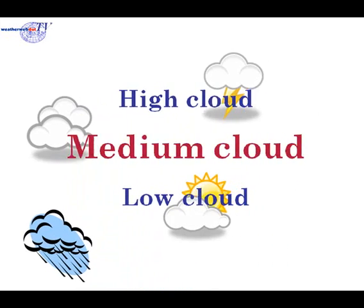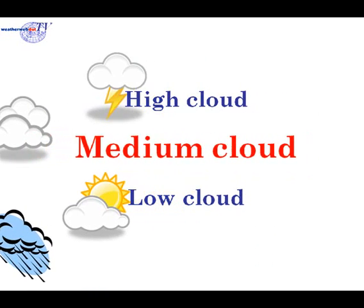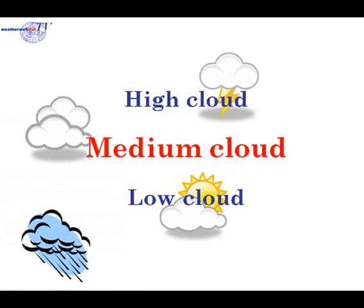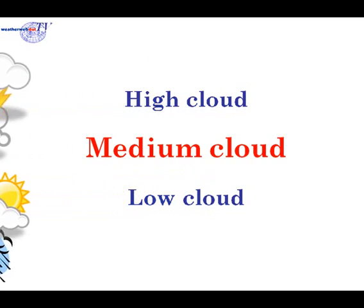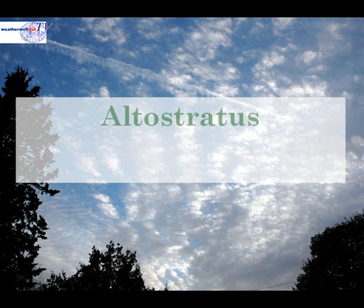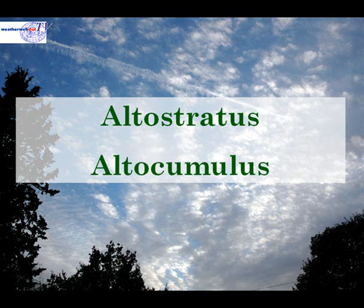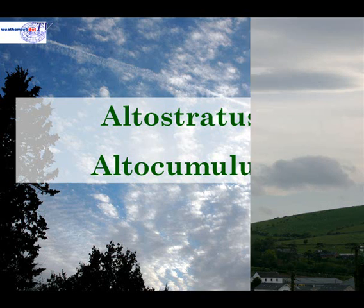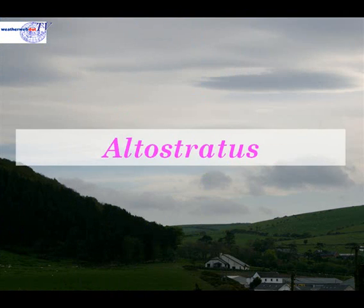In this video we're going to be looking at cloud that occurs in medium levels in the atmosphere. Clouds at this level fall into two categories. The first is alto stratus. The second is alto cumulus — alto meaning high. Firstly we're going to take a look at alto stratus cloud.